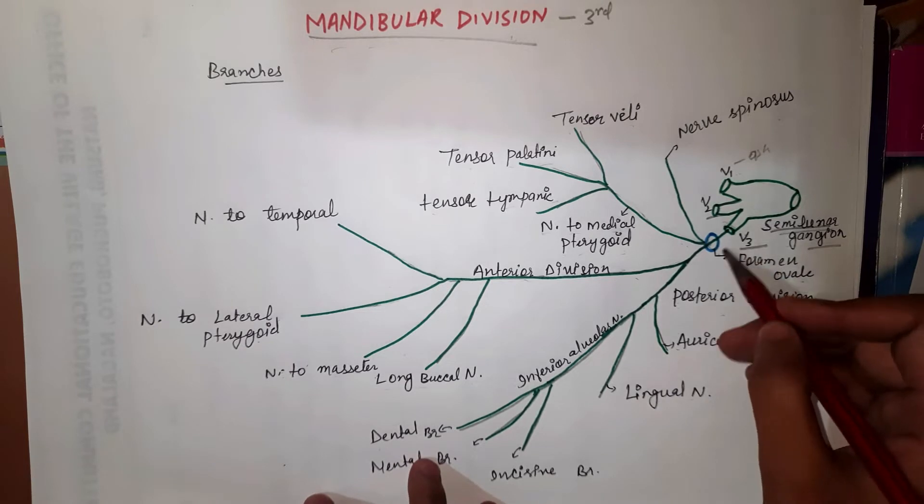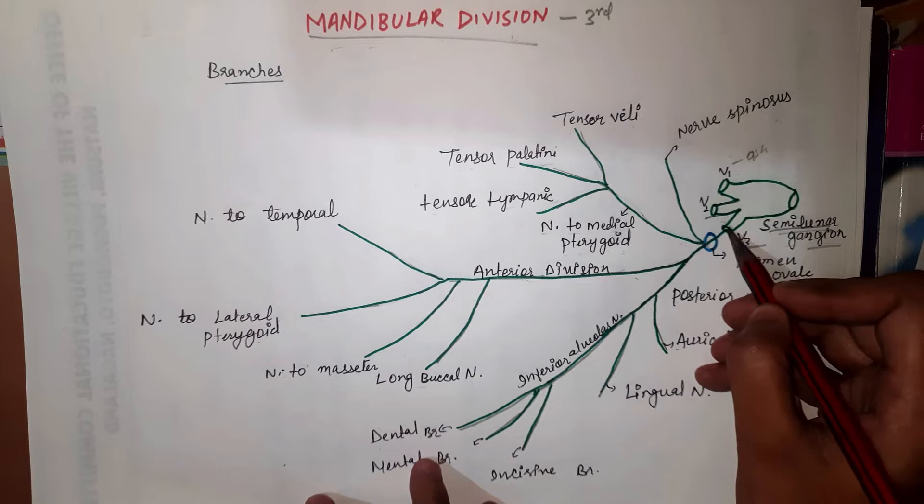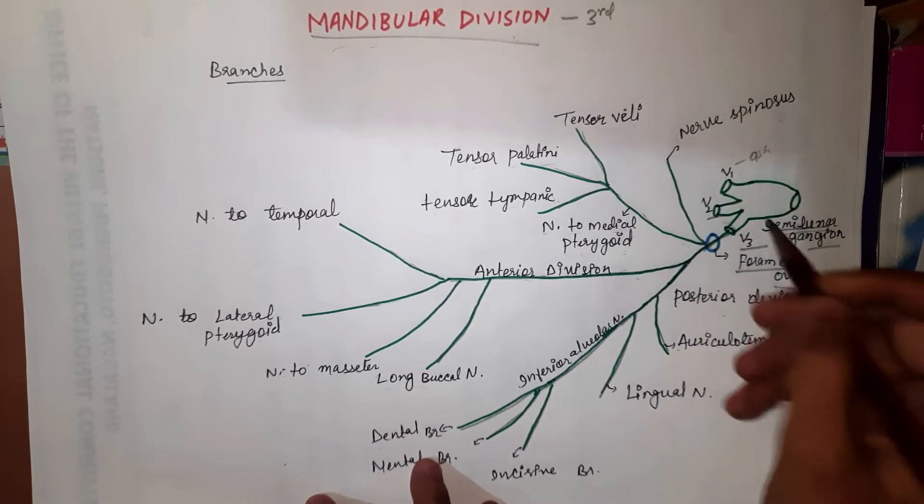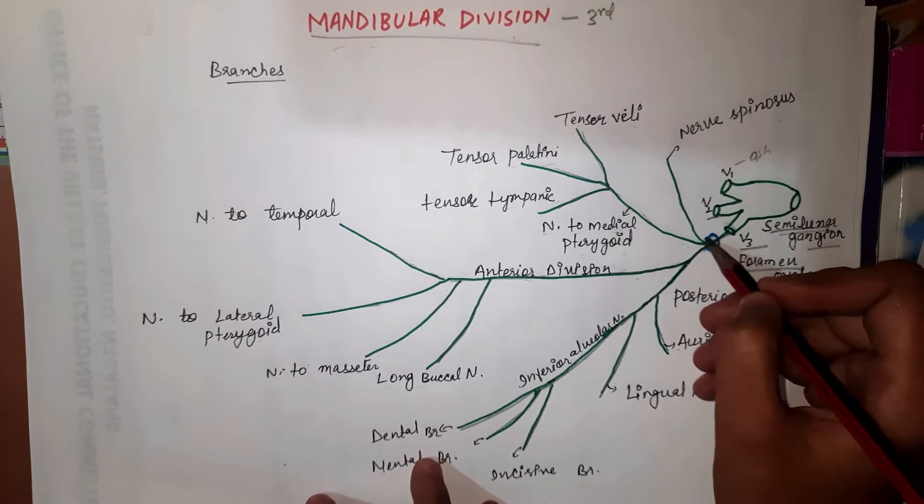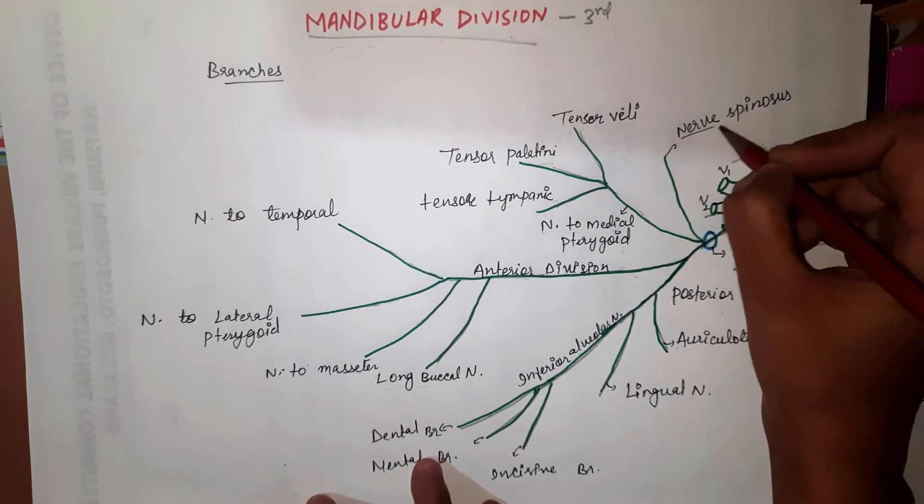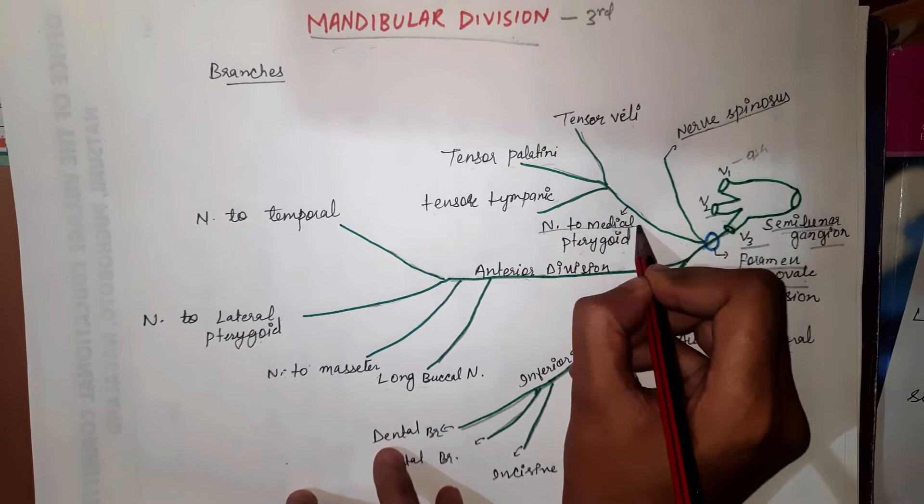Let's discuss its branches. The mandibular nerve first passes through foramen ovale, and before division it gives rise to two branches. The first branch is called nervus spinosus, and the second branch is called nerve to medial pterygoid.